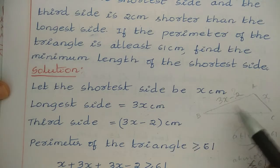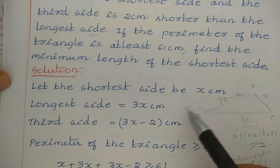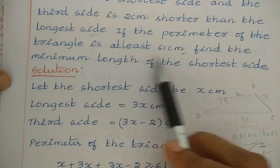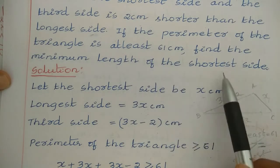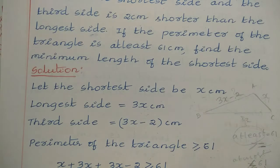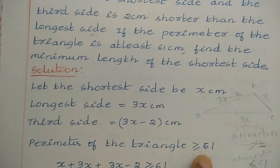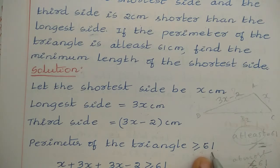Considering the triangle with sides x, 3x, and 3x − 2, they have given that the perimeter is at least 61 cm. Whenever you have 'at least,' you use greater than or equal to. At least 61 means the minimum is 61, or the perimeter can be more than that — 62, 63, 64, and so on. So the perimeter of the triangle is greater than or equal to 61.